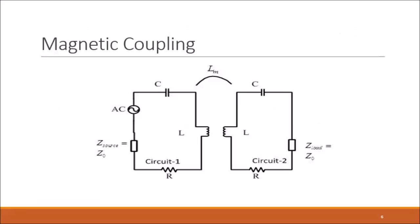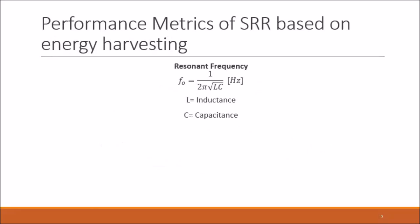The magnetic coupling is therefore represented as a mutual inductance. Here we have the magnetic coupling of the transmission line in circuit 1 with the split ring resonator in circuit 2. The resonant frequency F0 is given as 1 over 2π times the square root of LC, where L and C are the inductance and capacitance of the split ring resonator.